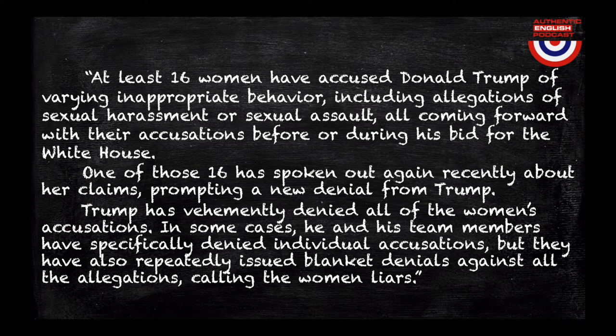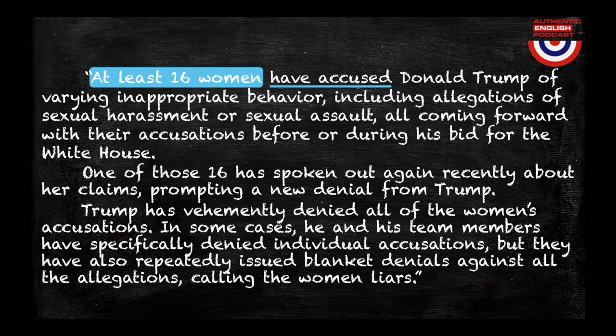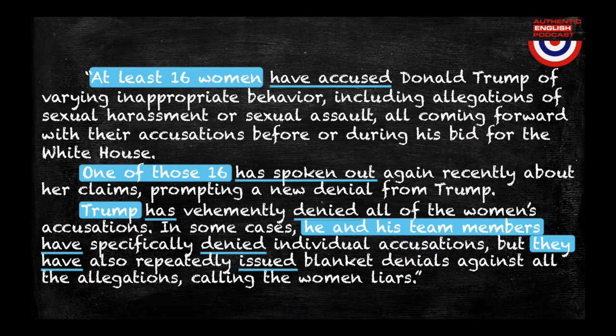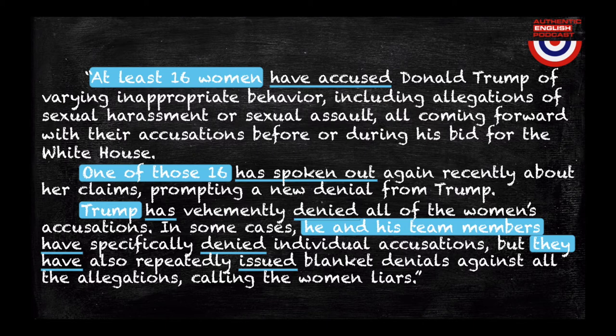Let's explore the following: 'At least 16 women have accused' and 'One of those 16 has spoken out.' The verb tense used in these examples is the present perfect. Let's analyze the structure for this verb tense: subject plus 'have' (for I, you, we, or they) or 'has' (for he, she, or it), plus the past participle. Note that the focus in these examples is the subject — who or what is doing the action.